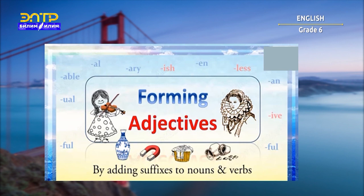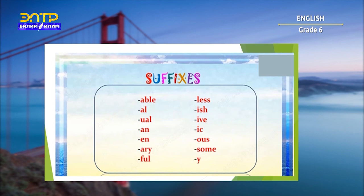Adjectives can be formed by adding suffixes at the end of a base word. A suffix is a letter or group of letters added at the end of a word, which makes a new word. The new word is most often a different word class from the original word. Here is a list of suffixes — they are endings typical of adjectives. If you see these endings at the end of a word, you can be certain it's an adjective.